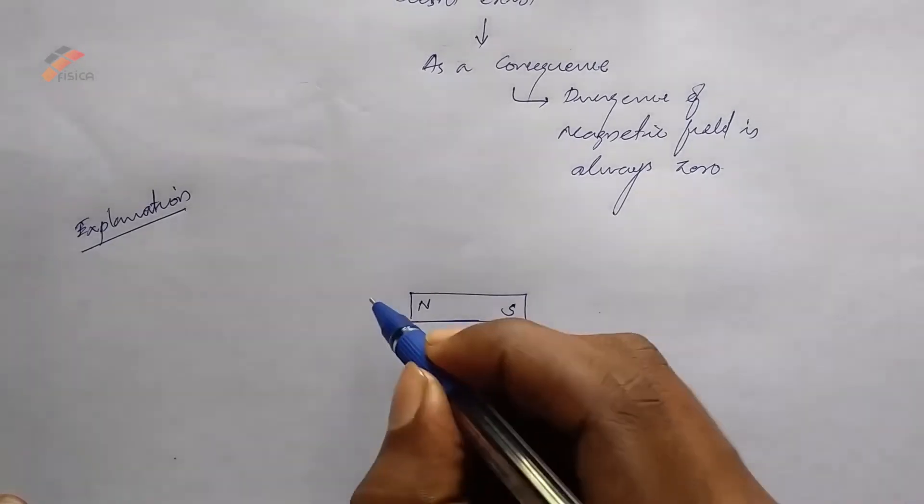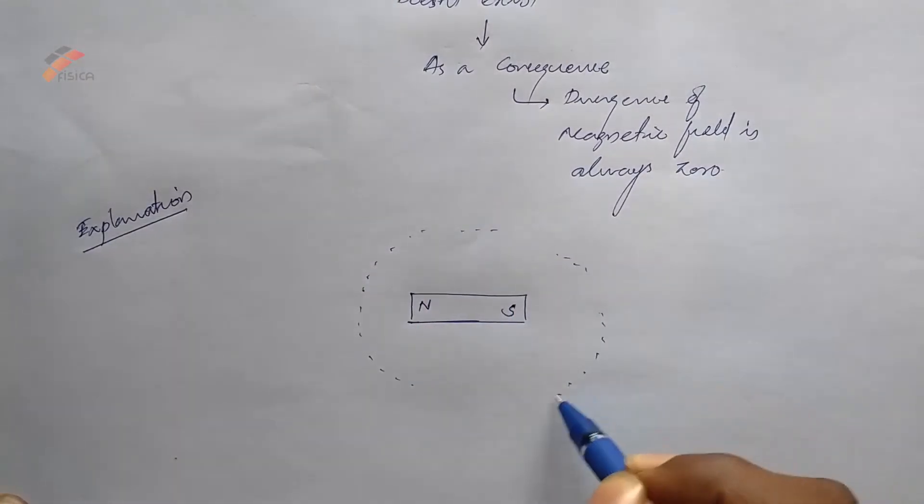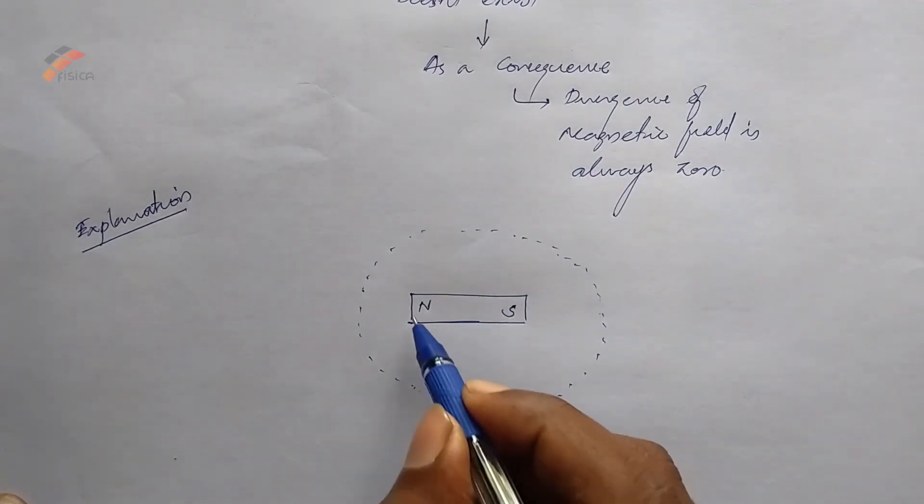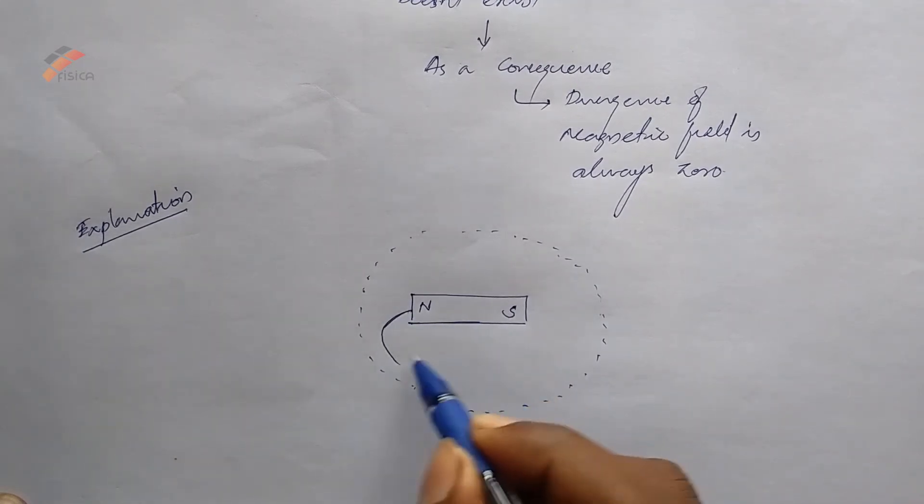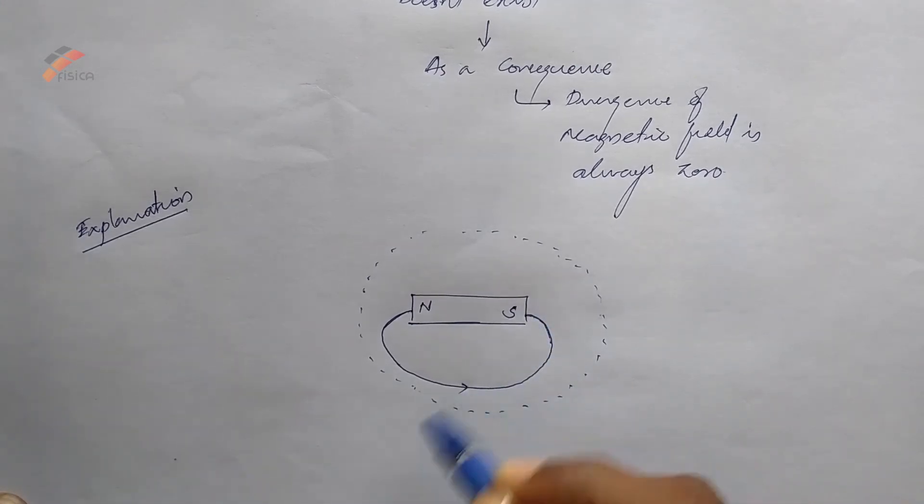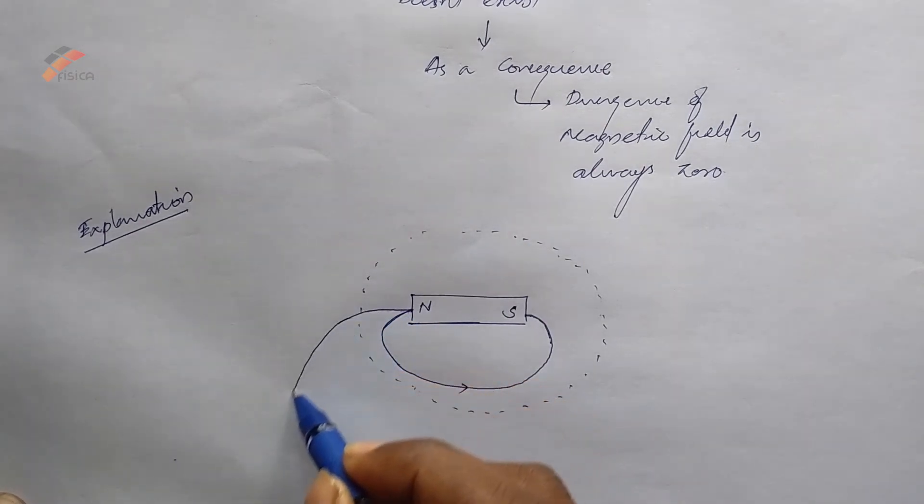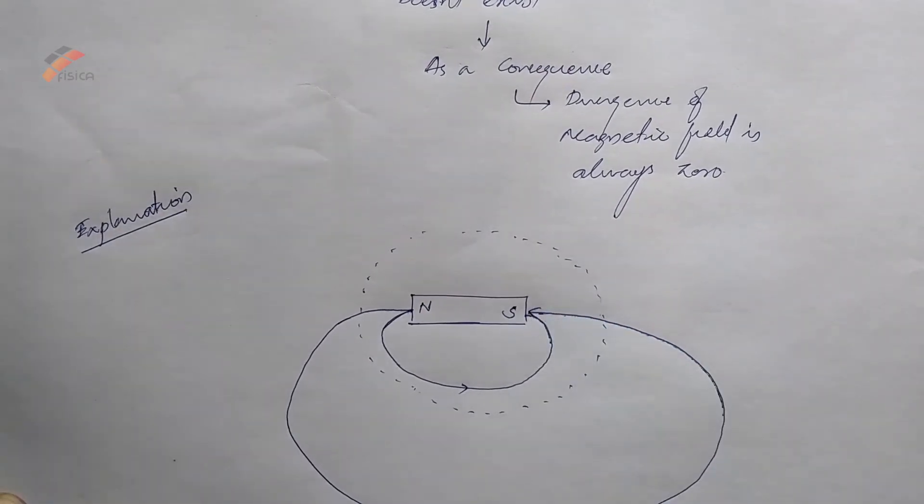Now I'm constructing a Gaussian surface. You know the magnetic field lines arise from north pole and end up in the south pole like this. Also some lines will come out of the Gaussian surface and it also come back to the south pole.